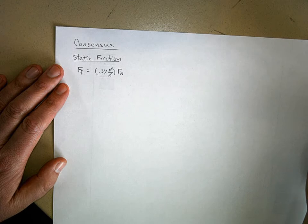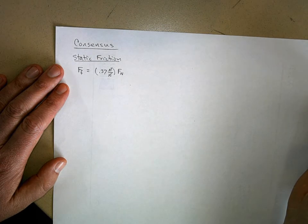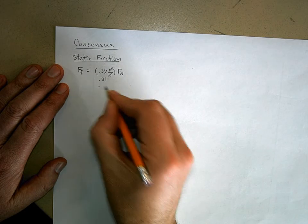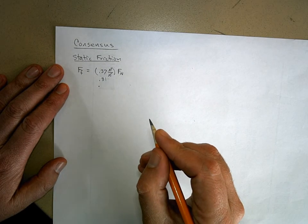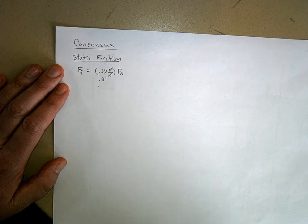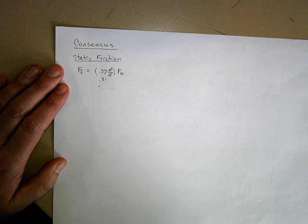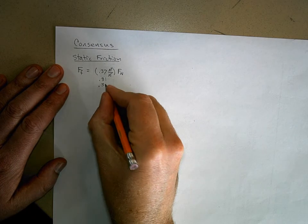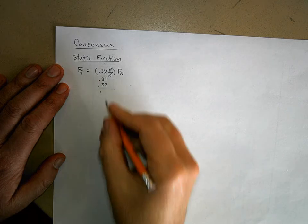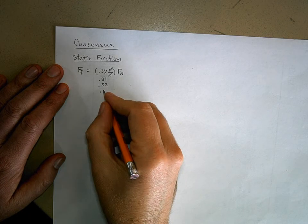Group two, what did you get for your slope? 0.31. Group three? 0.32. And group four, what did you get for your slope? 0.27 — that's pretty low, but we'll go with it.